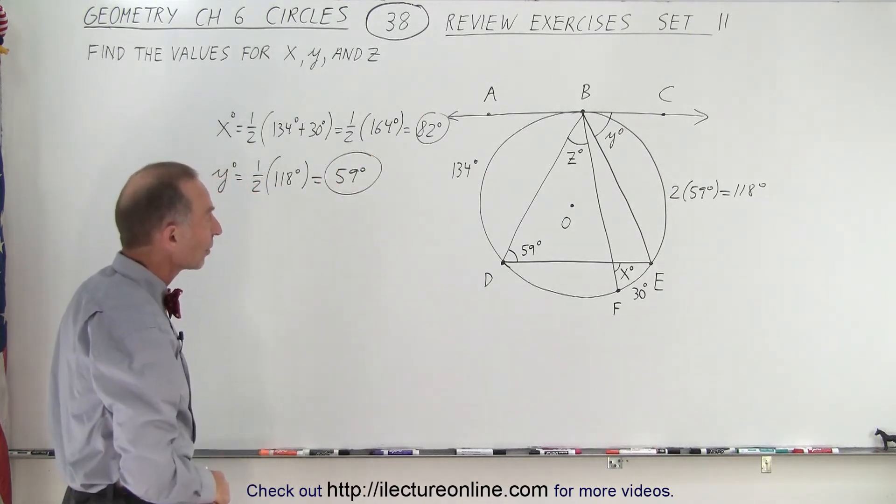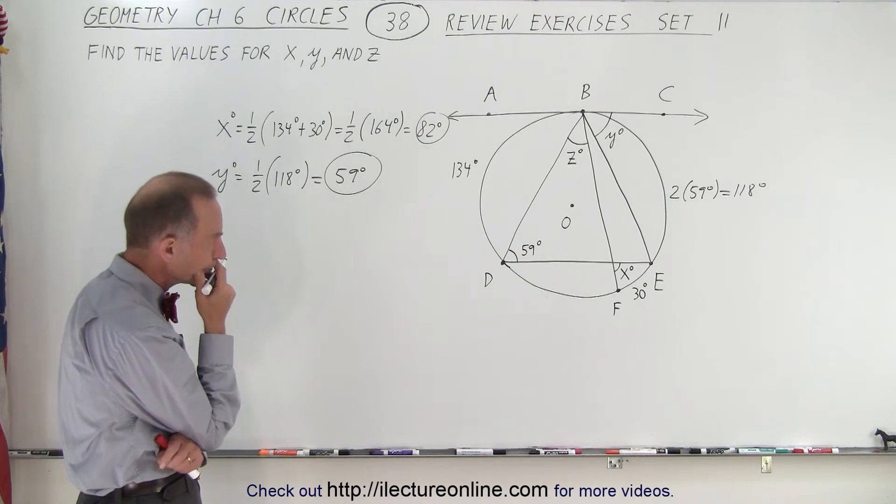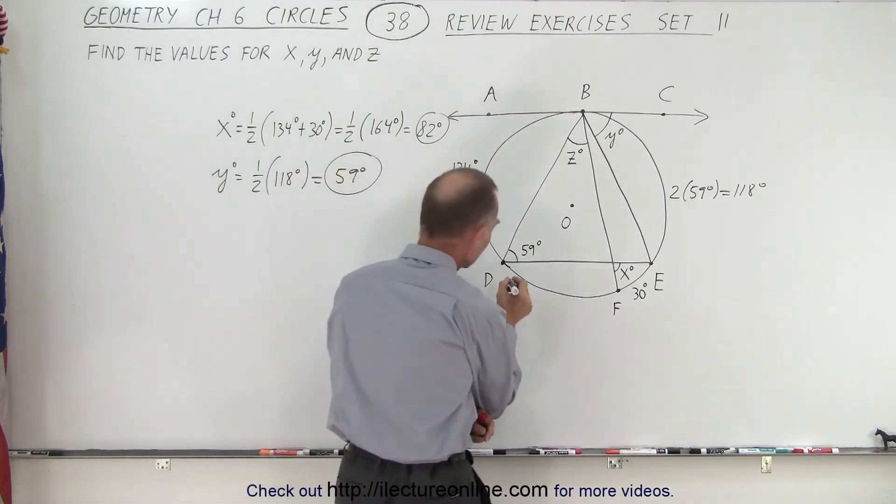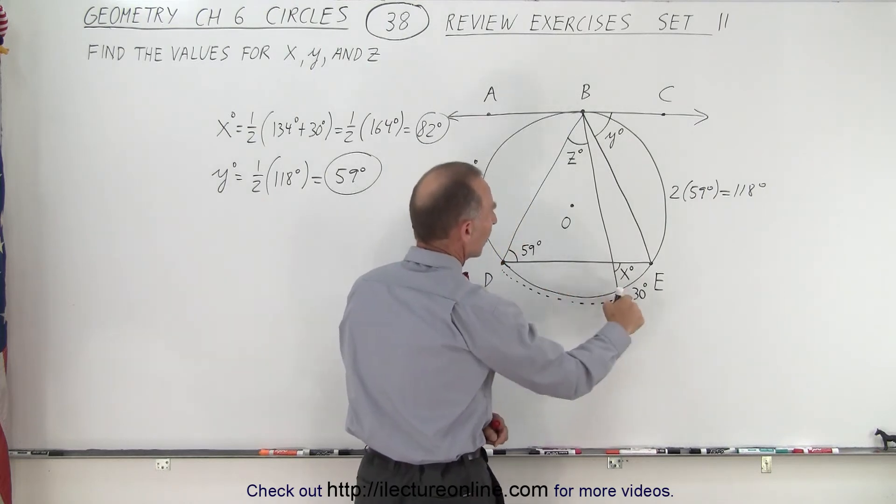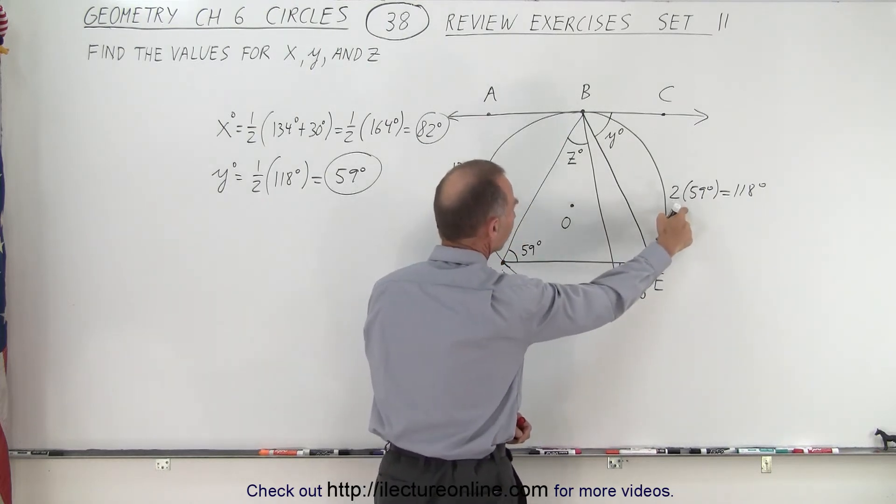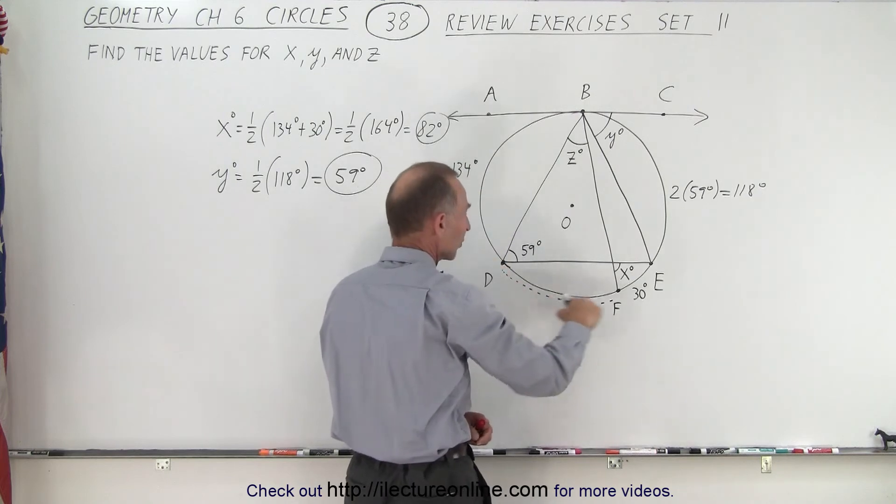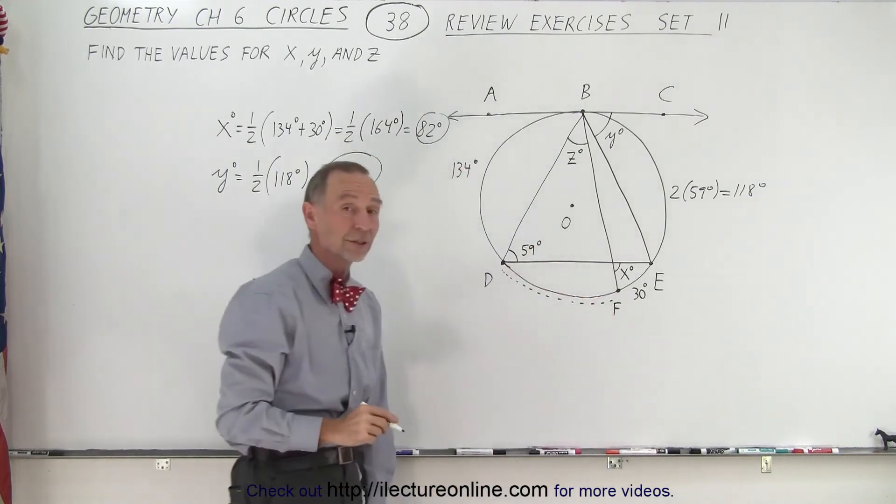Now we have z left. To find z, we need to know the measure of this arc right here. But we know the measure of this arc, we know the measure of that arc, we know the measure of this arc. So this would be 360 minus the sum of the other three.